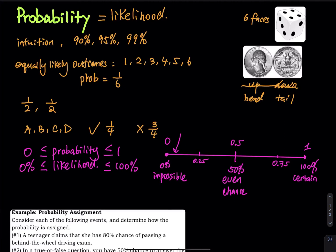Probability is always between 0 and 1, or 0% and 100%, including 0 and including 1. There is no 101%, 105%, or 200%. Those numbers are not probabilities.